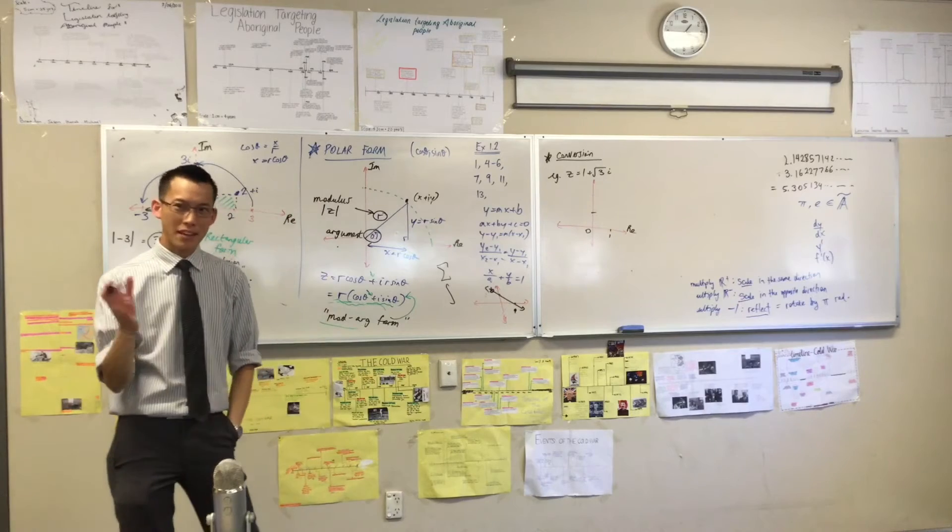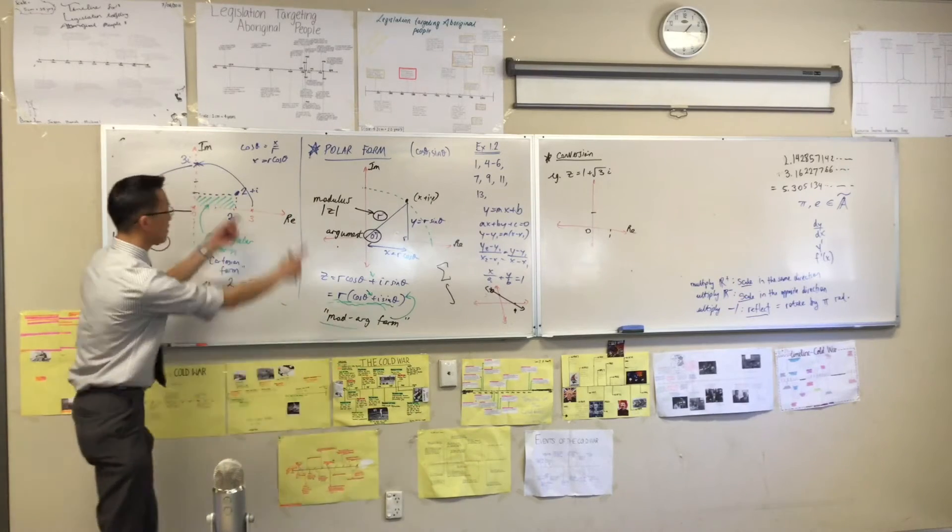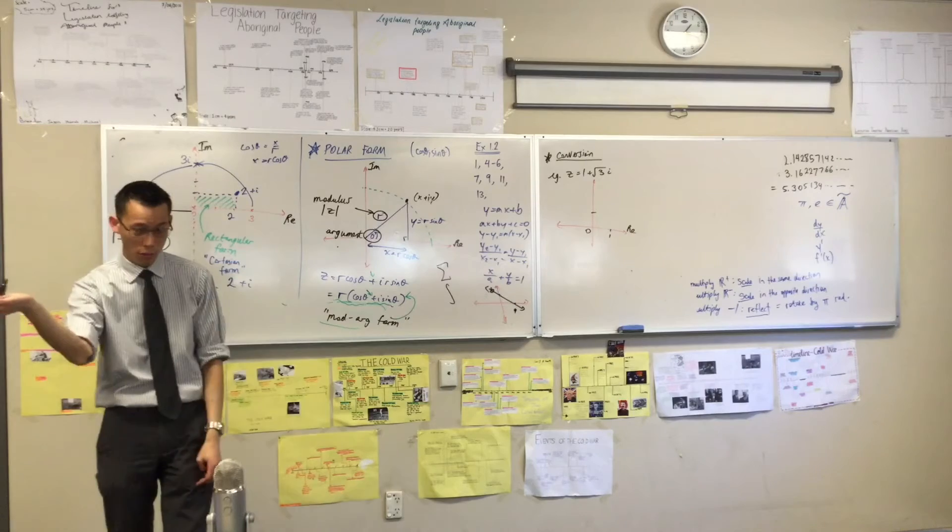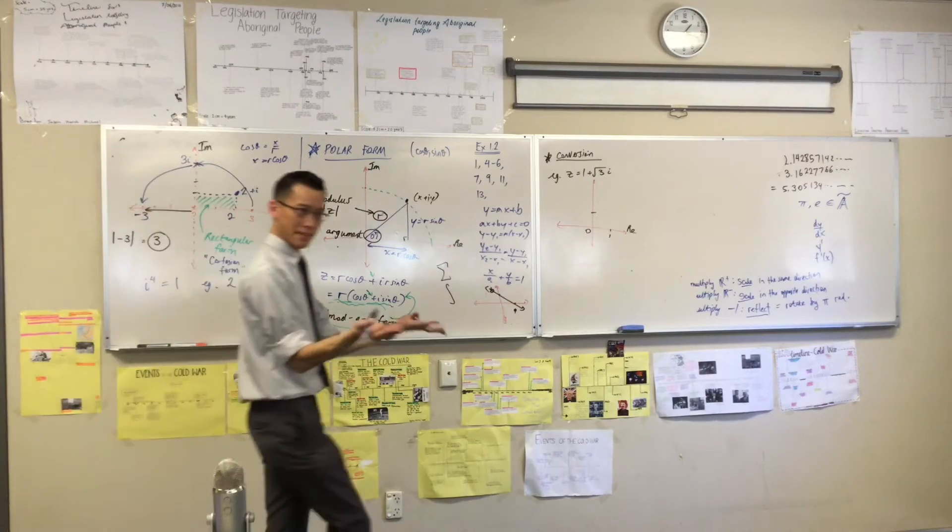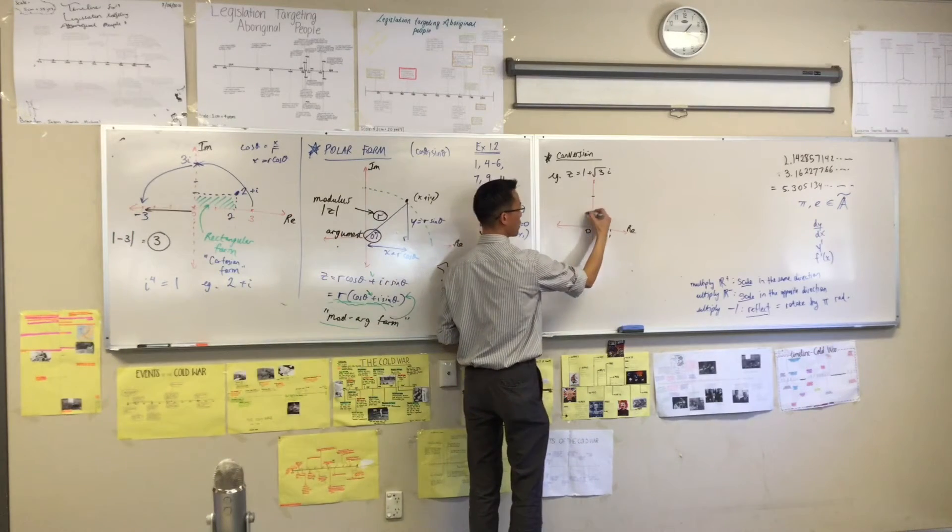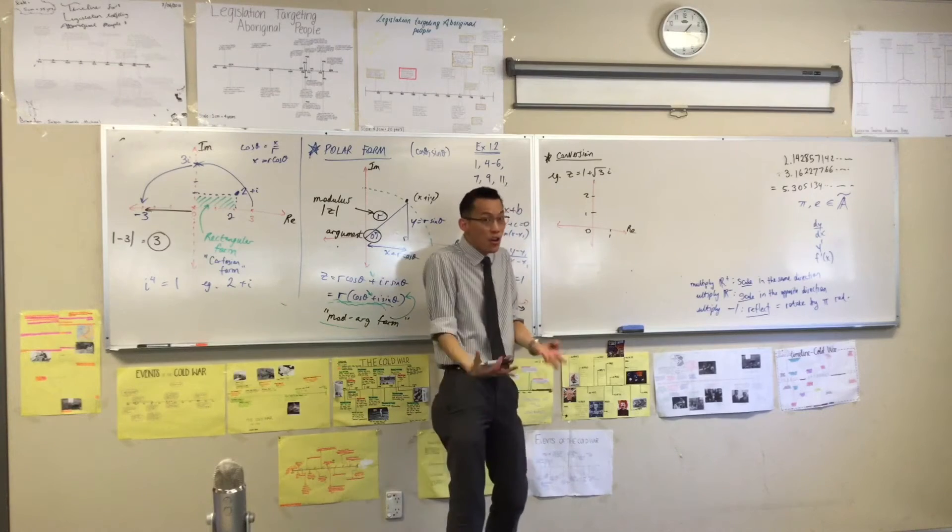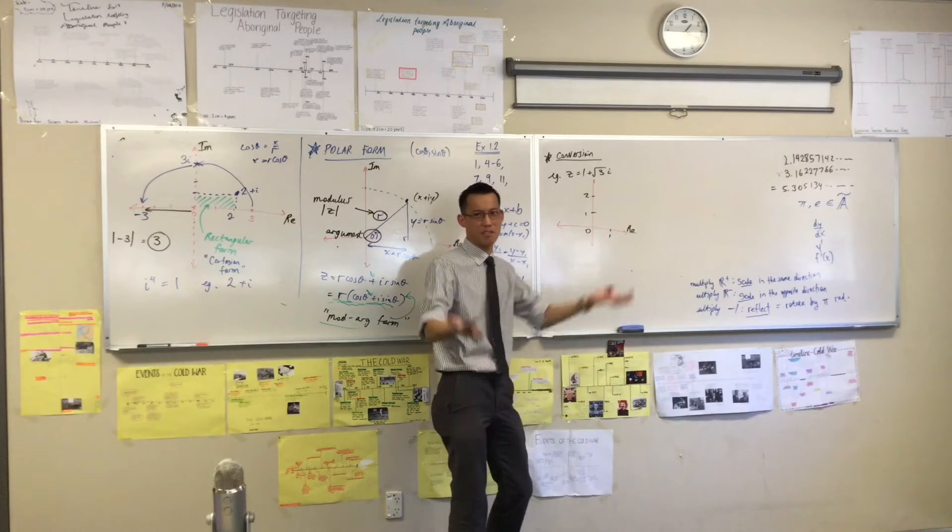So I'm going to go off one unit on the real axis. I should have labeled that. A bit lazy. How far do I go off the imaginary axis? Root 3. Now, you might not know what root 3 off the top of your head is. It's about 1.7.